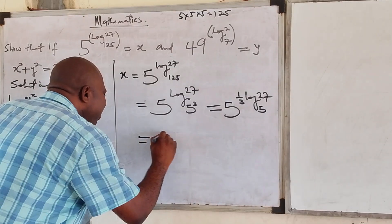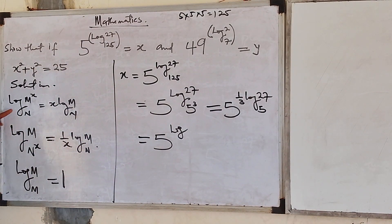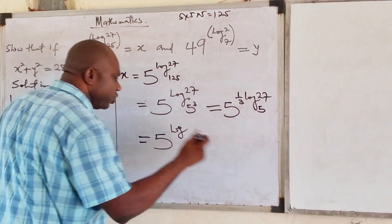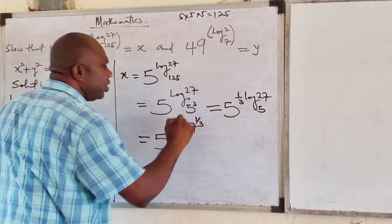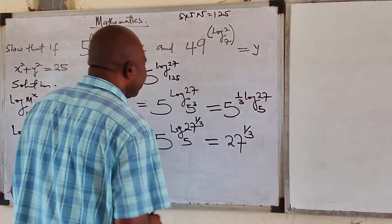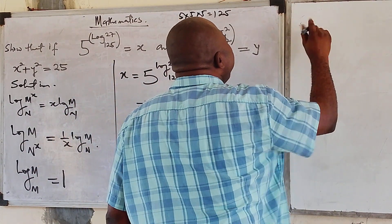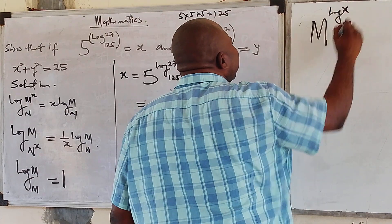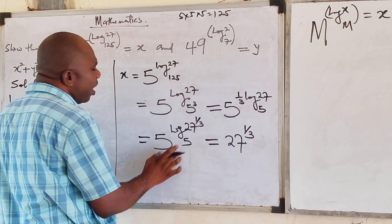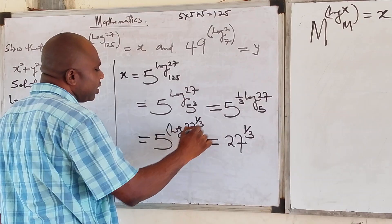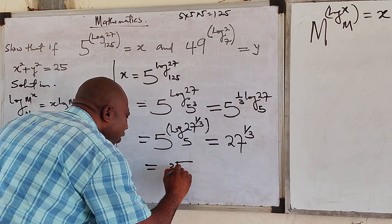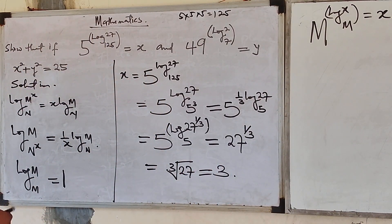This is the same as saying 5 raised to the power of log 27 raised to the power of 1 over 3, base 5. Because when the number is carrying the power, we can bring it to the front. Now we use the identity: m raised to the power of log x base m equals x. Here we have 5 and base 5, so we just pick 27 raised to the power of 1 over 3, which is the cube root of 27, and the cube root of 27 is equal to 3. So x equals 3.